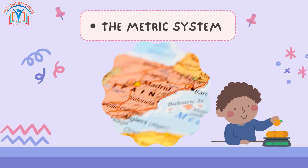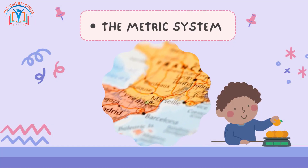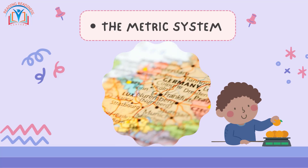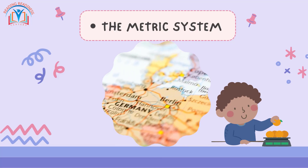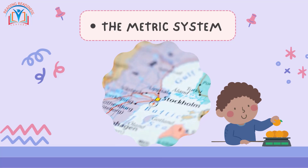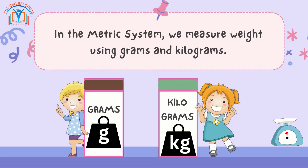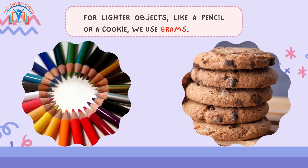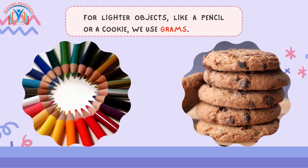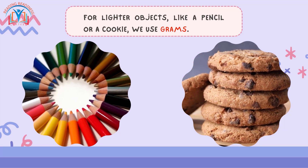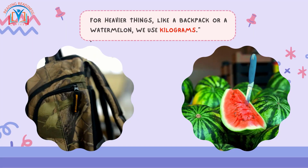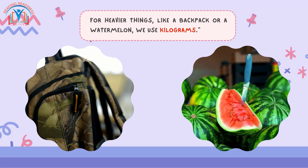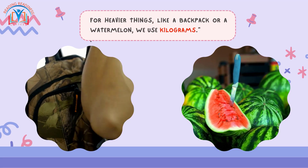First up is the metric system. This is used by many countries and it's quite straightforward. In the metric system, we measure weight using grams and kilograms. For lighter objects like a pencil or a cookie, we use grams, and for heavier things like a backpack or a watermelon, we use kilograms.